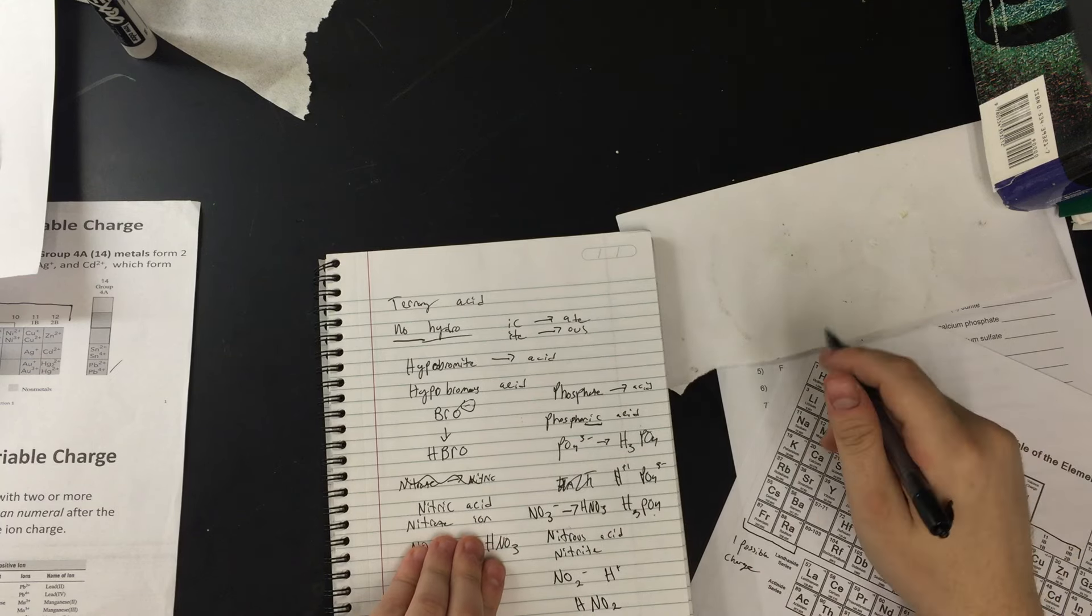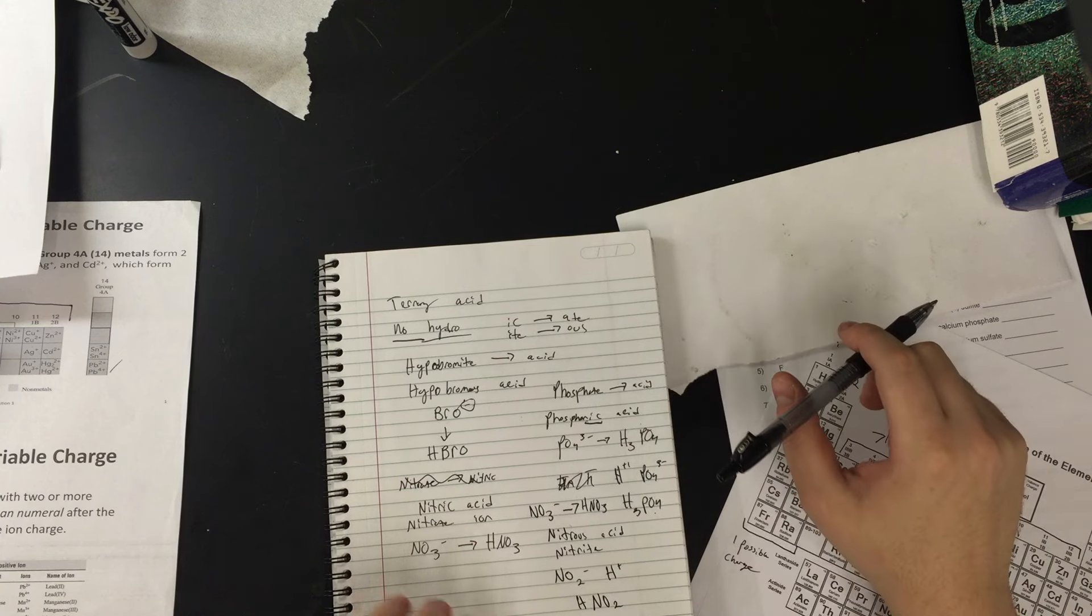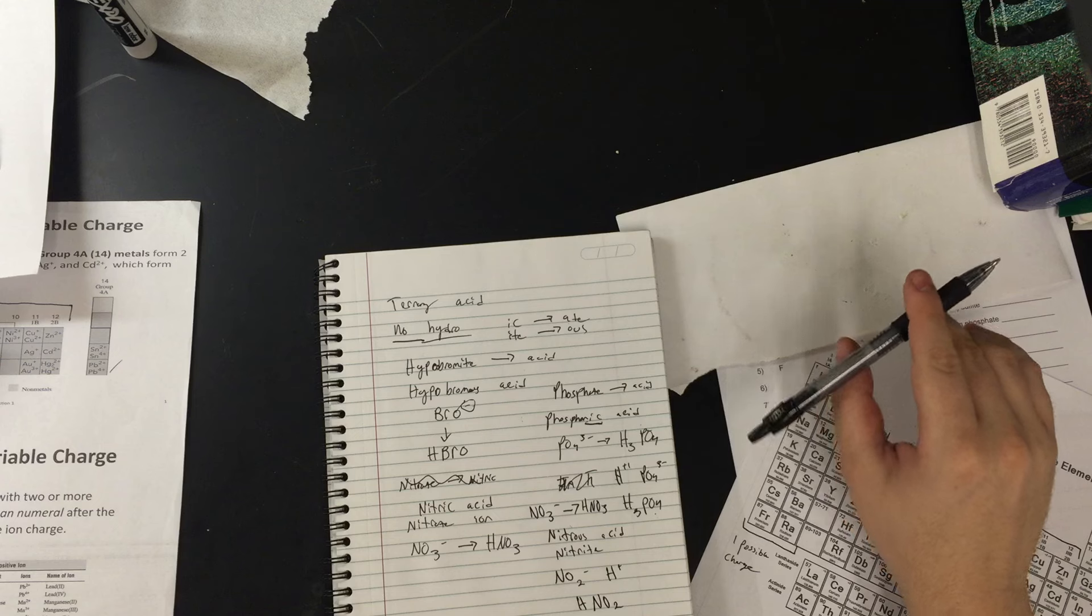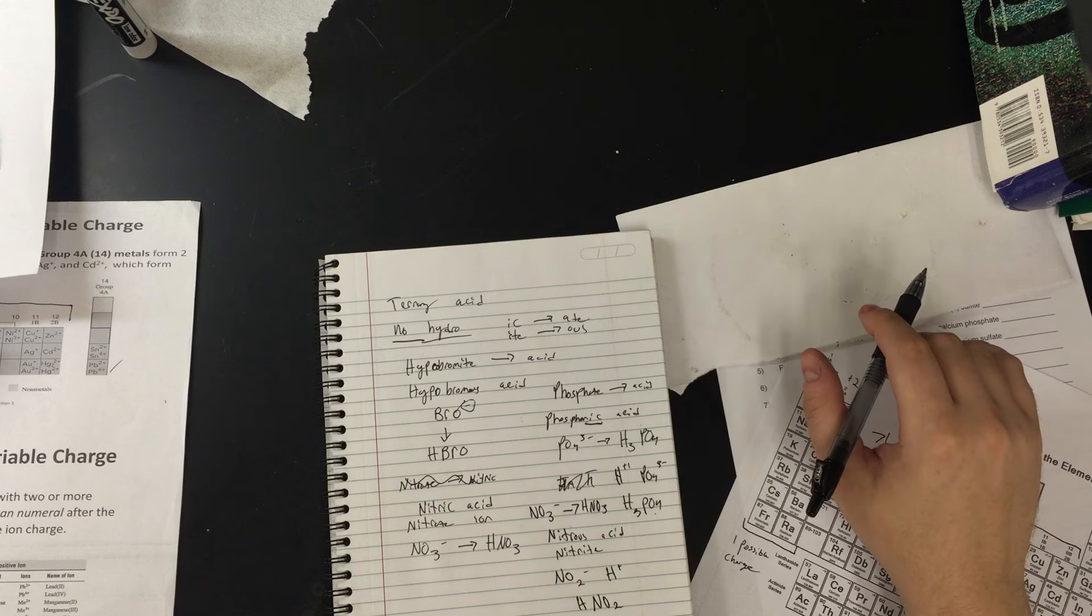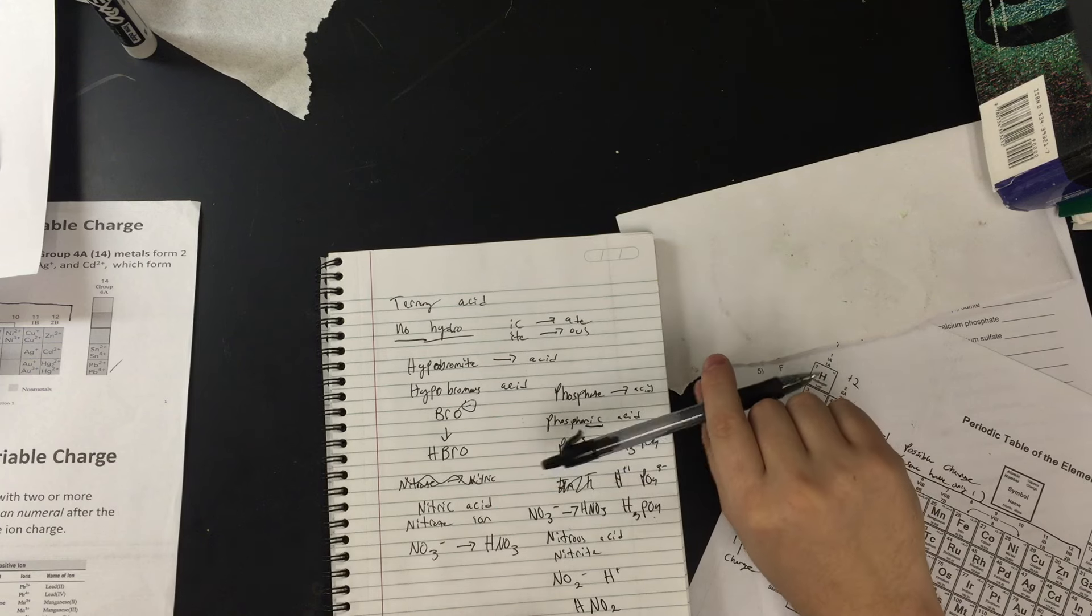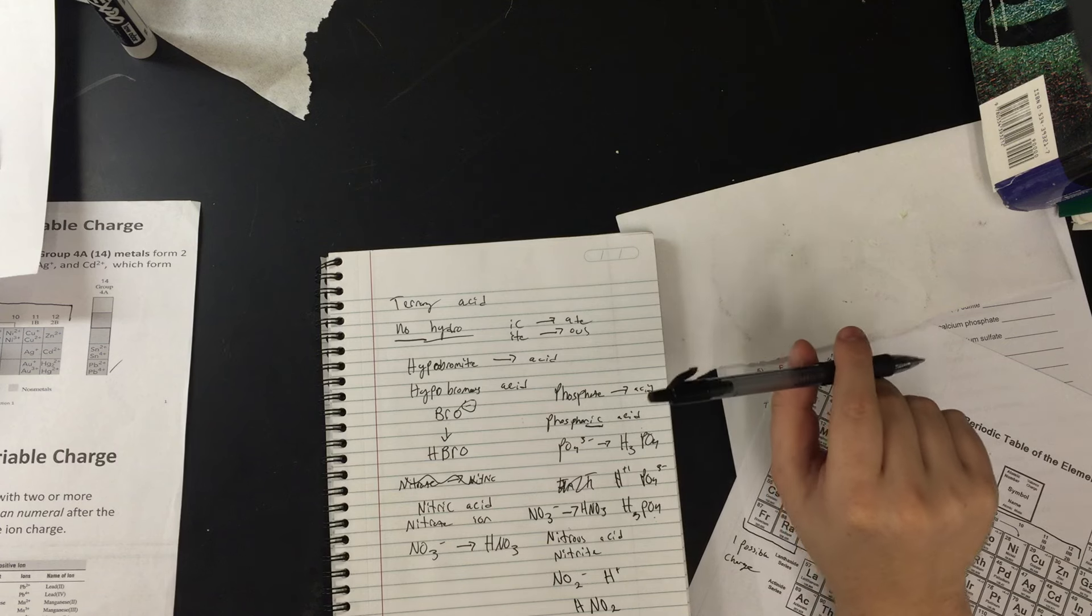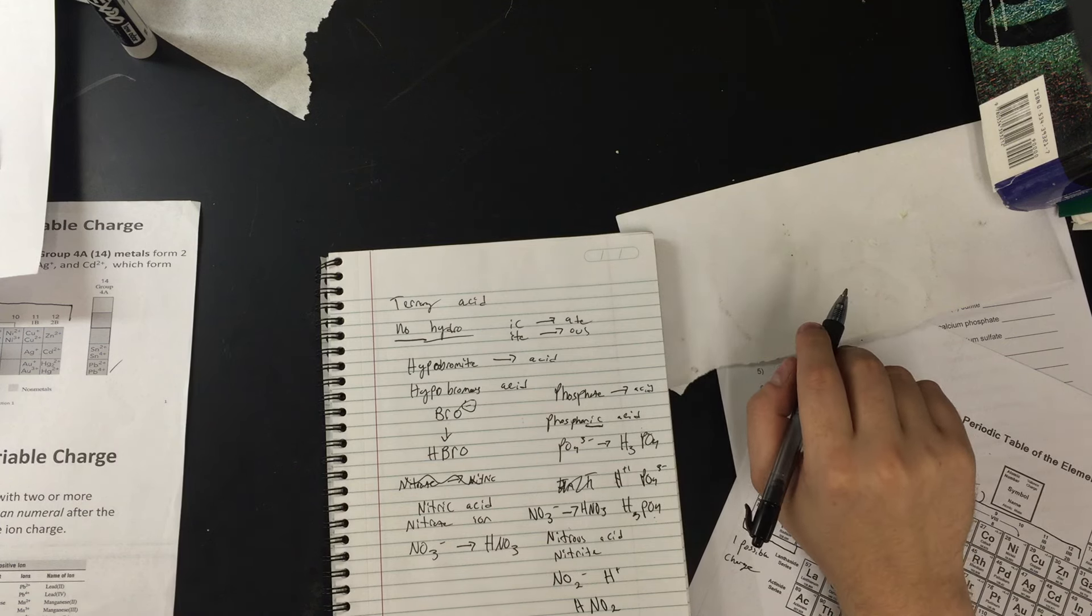And that's the difference between ternary and binary acids. Binary, just the hydro. Hydro is going to be the main key. It's always going to end with ic. There's never going to be an us. So it's going to be hydro, element name. Just the element name. Remember, no polyatomics in binary. Ic, acid. Hydrosulfuric acid, all that. Ternary.